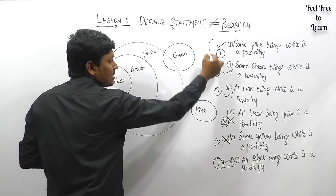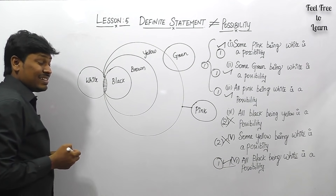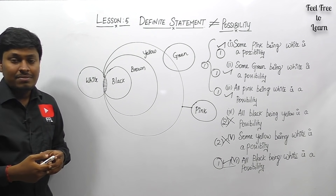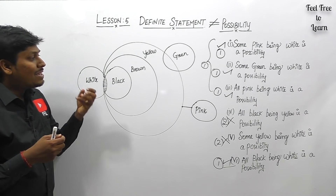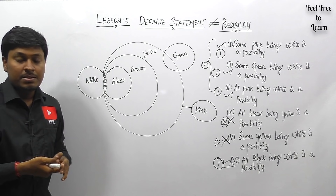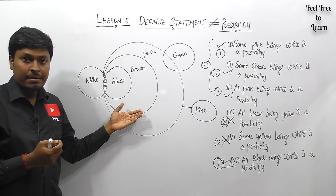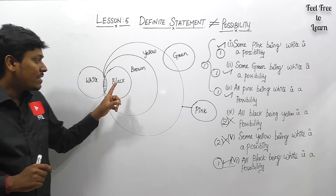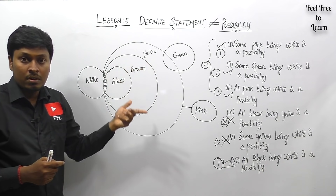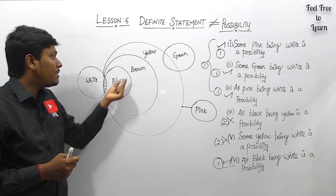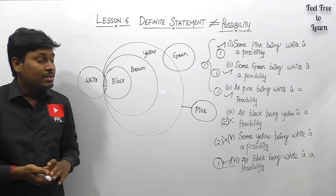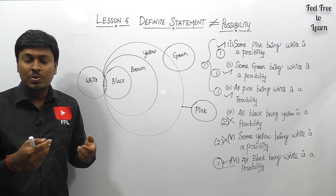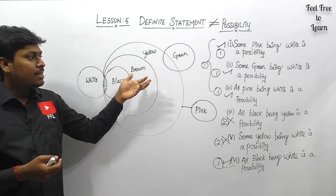So the first three conclusions are case number one and conclusions four and five are case number two. Practice more questions like this because students keep making mistakes in possibility topics. The simple logic: after drawing the Venn diagram, if the statement itself already gives you the answer definitively, and then they ask a possibility, it is wrong. For example, all black being yellow is a possibility is wrong because all black are already yellow in the diagram.